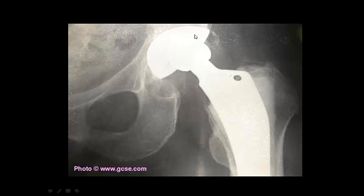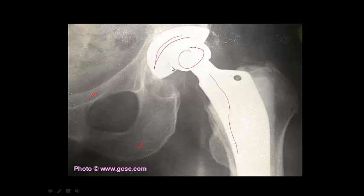This shows a hip replacement. Here's your acetabulum, and here's what's mimicking the head of your femur — a metal spike that's pounded into your femur. You can see the ischium and the pubis bone. They replace the acetabulum with a medical plastic and the femoral head with this metal implant.